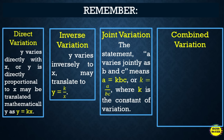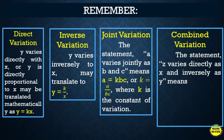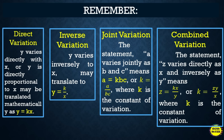Remember these three types because we will use these concepts for the new type of variation — combined variation. In combined variation, the statement 'Z varies directly as x and inversely as y' means Z = kx/y. Z varies directly as x gives us kx on top, and inversely as y places y in the denominator.